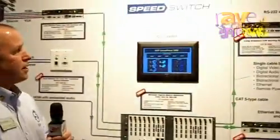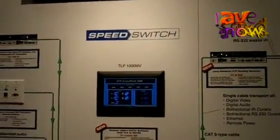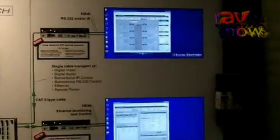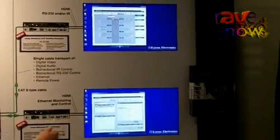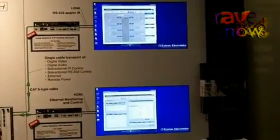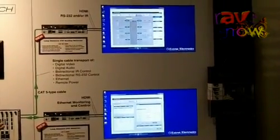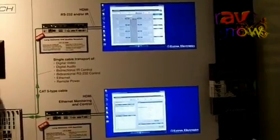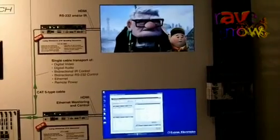Also, speed switch technology allows for ultra-fast switching of HDCP encrypted content within the system. Here's an example. We have a PC which happens to be showing our intuitive software control program for XTP, but these two displays are both showing PC inputs. What I'm going to do through the control system is switch a Blu-ray player to the output, and you can see how quick the switching takes place with those types of devices.